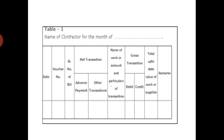Then gross transactions — how much debit and credit — and the total up-to-date value of the work or supply, meaning how much percentage of work has been completed till date, whether advance payment or running bill payment, has to be entered into this column. Any remarks — for example, if he has taken 50% of the money but completed only 10% of the work — have to be written in the remarks column, because he may need to procure materials as a lump sum, requiring more money even at 10% execution.